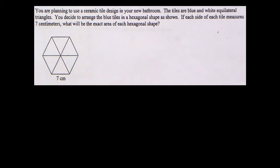Alright, so this next problem: you are planning to use a ceramic tile design in your bathroom. The tiles are blue with white equilateral triangles. You decide to arrange the blue tiles in a hexagonal shape as shown. If each side of each tile measures 7 cm, what will the exact area of each hexagonal shape be?